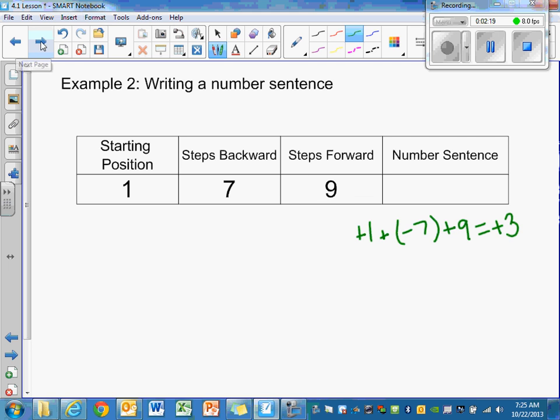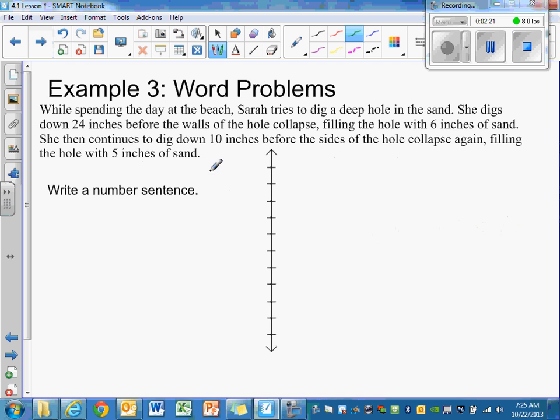On to example 3 which is a word problem. So we're going to read the word problem and then circle the important information. While spending the day at the beach, Sarah tries to dig a deep hole in the sand. She digs down 24 inches. Seems pretty important. Before the walls of the hole collapse, filling the hole with 6 inches of sand.